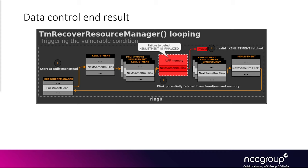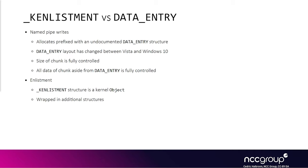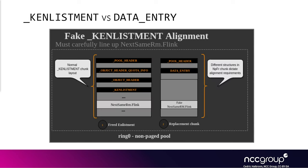Now it's a good time to revisit the end goal: using the named pipe write, we want to introduce a fake k enlistment with a controlled pling pointer. We need to understand what data we control or do not control in the replacement chunk. You control most of the data in the named pipe except a small header in front of it, but you also need to account for the layout of the original k enlistment, since it has its own header structures due to being tracked by the object manager. Unlike named pipe data, which is not tracked by the object manager.